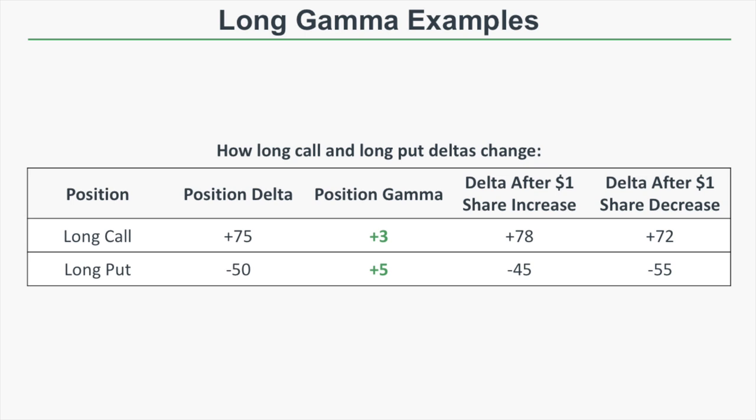If the stock price falls by one dollar, we subtract that positive gamma of 5 from the initial position delta of negative 50, so the long put's new delta will be negative 55. When the stock price increases, the long put's delta gets more positive, and when the stock price decreases, the long put's delta gets more negative. If you're trading long options, positive gamma means you want the stock price to move through the strike price.